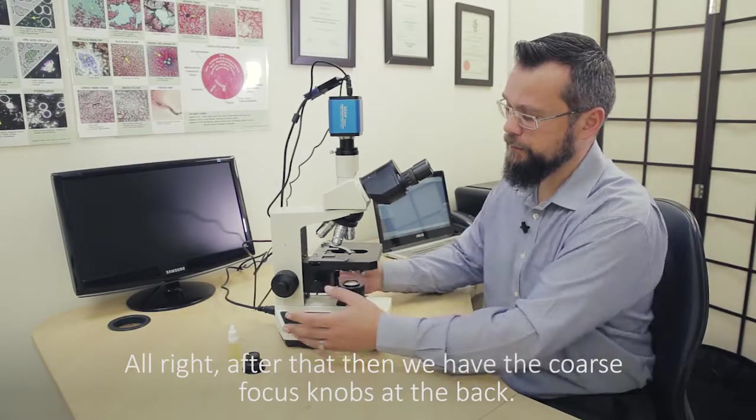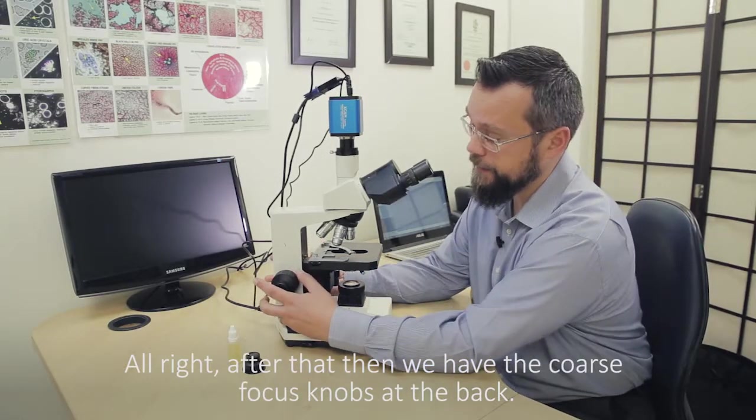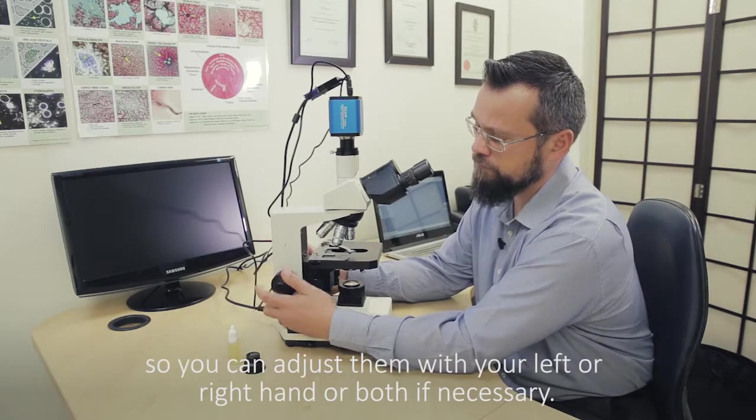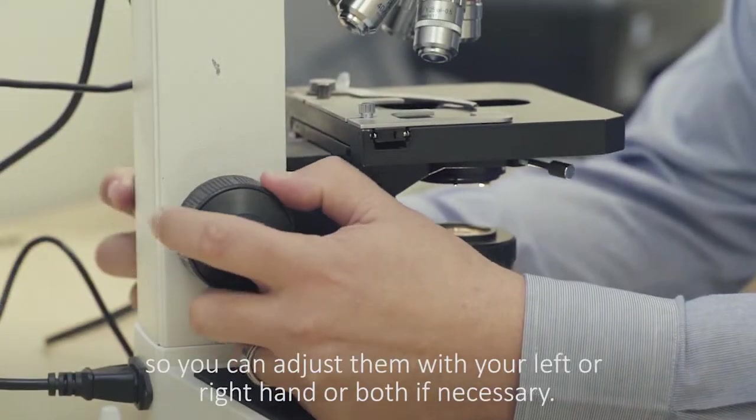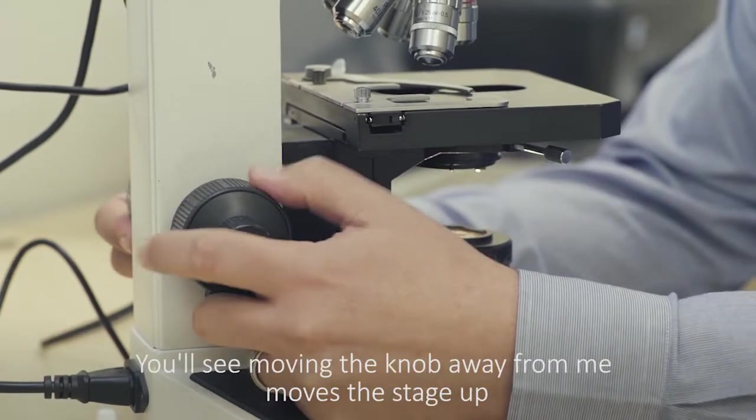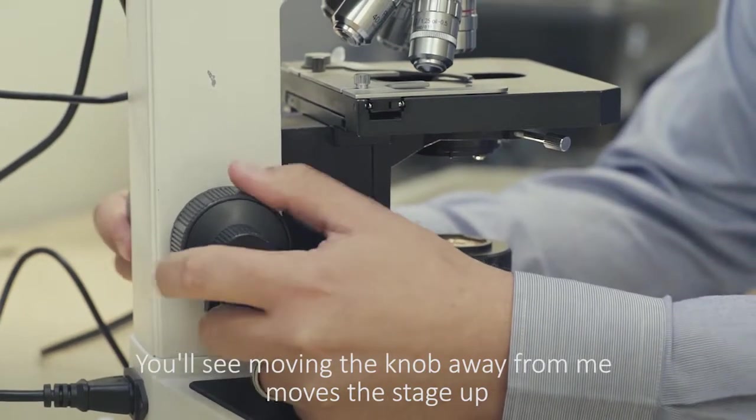After that then we have the coarse focus knobs at the back. These are on the same system so you can adjust them with your left or right hand or both if necessary. You'll see moving the knob away from me moves the stage up, moving it towards me moves the stage down.